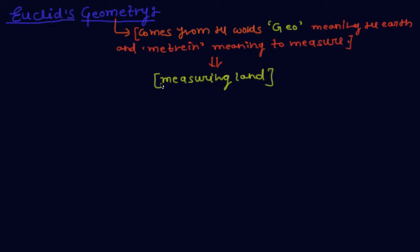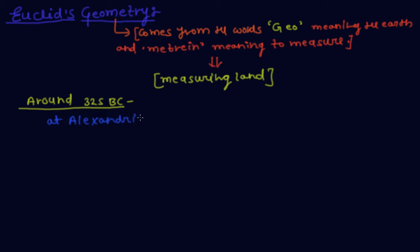This branch of mathematics was studied in various forms in every ancient civilization. Basically, geometry was used in very ancient cultures just for measuring land. So around 325 BC, a teacher of mathematics at Alexandria in Egypt named Euclid...